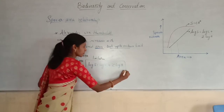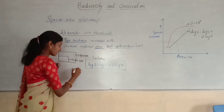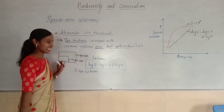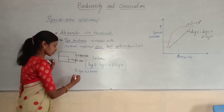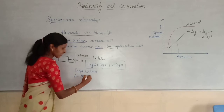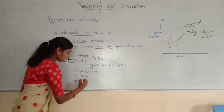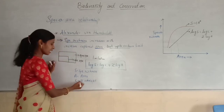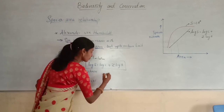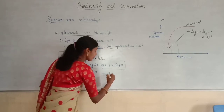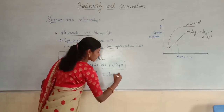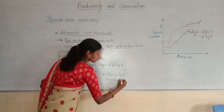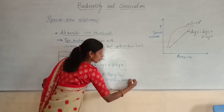This equation is very important. Here, S indicates species richness, A indicates area, C indicates the y-intercept, and Z indicates the slope of the line, also called the regression coefficient.